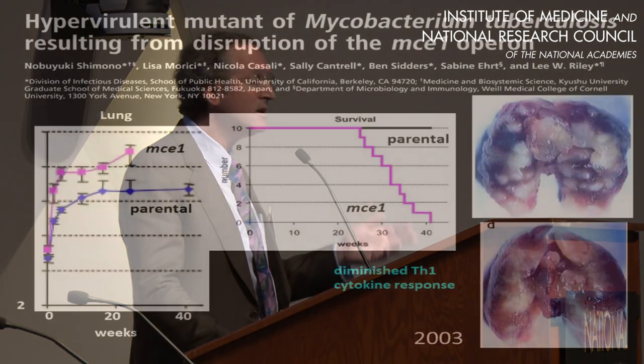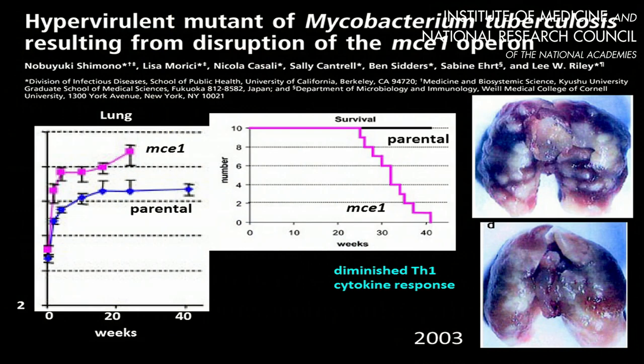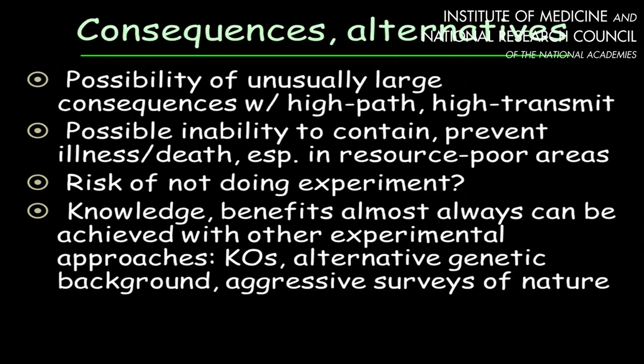Some have said that much of the science may not have anticipatable results, but very often we apply powerful selective conditions and screens that can be reasonably anticipated to yield agents with those properties. An unanticipated result occurred from a knockout approach resulting in gain of function — hypervirulence in Mycobacterium tuberculosis. We want to focus on work that is both deliberate and can be reasonably anticipated to yield these properties. We are talking about the possibility of creating an agent with high pathogenicity, high transmissibility, perhaps with other properties, that does not currently exist in nature.